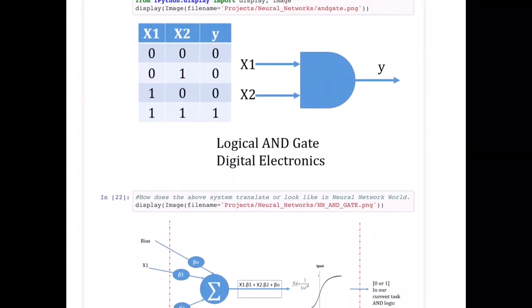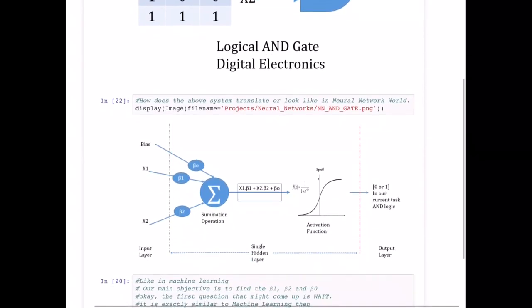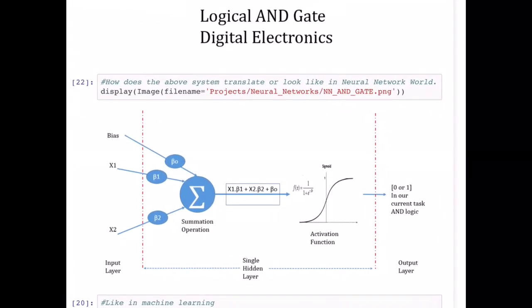You can see in the bottom structure how this input x1 and x2, which are my features in this case, and y is my output. You can see that this is actually how neural networks look like. Looks scary, but let me give you a little bit of explanation on this one.